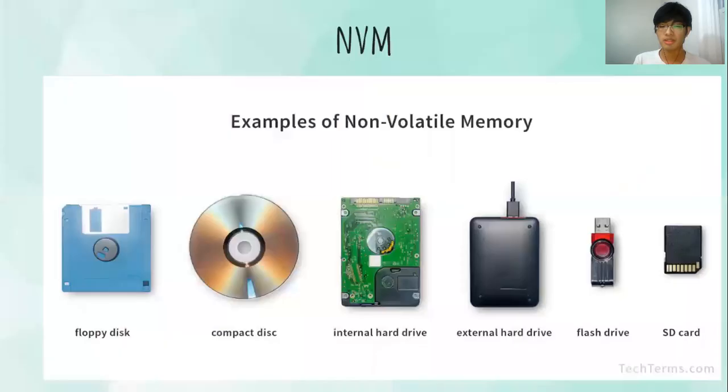Some examples of non-volatile memory are the floppy disk, the compact disk, the internal hard drive, the external hard drive, the flash drive, and the SD card.